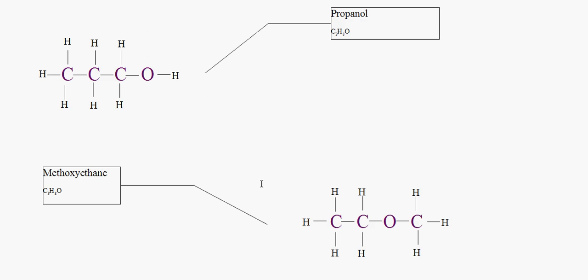So this oxygen could either be located here, here, or here, but it'll have the same chemical formula. So this one down here, the oxygen is located in between these two carbons. It pushes out this carbon. It's called an ether by the way.